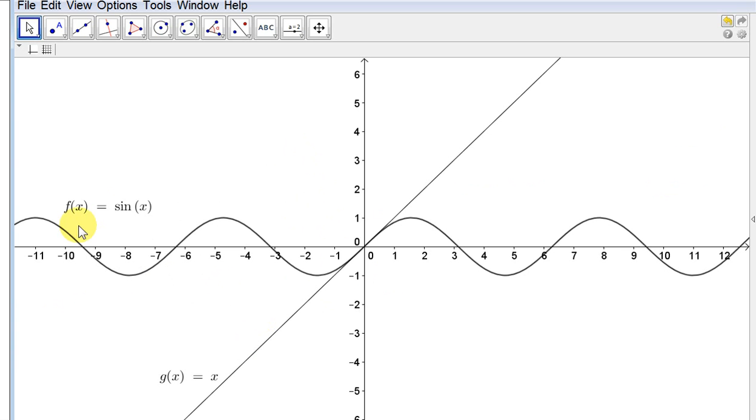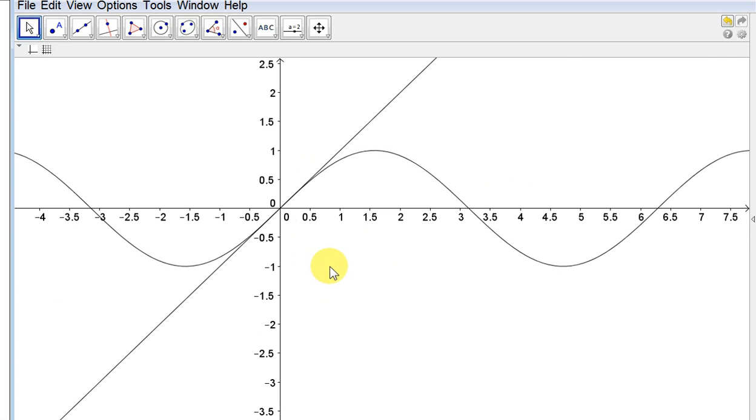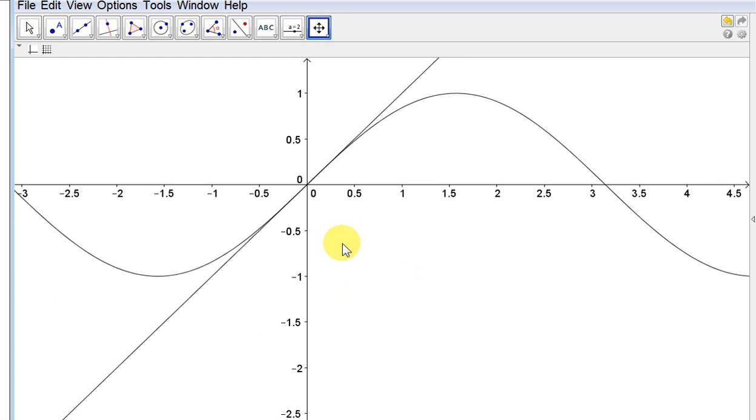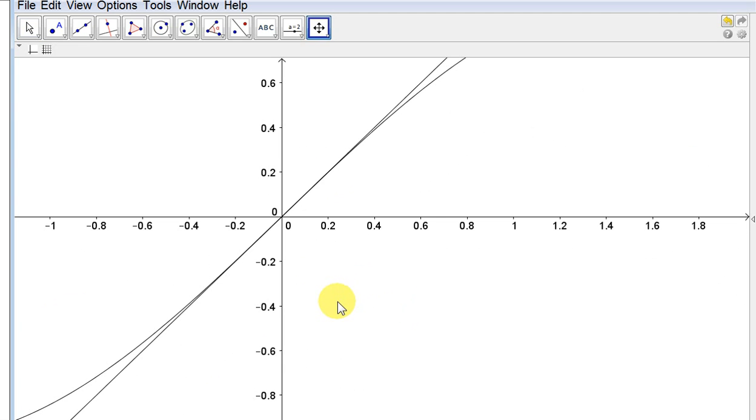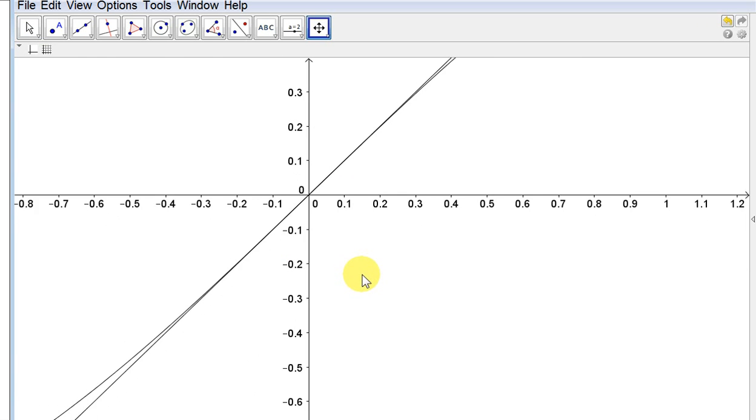We can also consider the graph of sin of x and the graph of x. And we can see that both graphs are nearly identical for values of x close to 0. We can zoom in on this graph. And you can see how close both x and sin of x are for values in the neighborhood of 0.